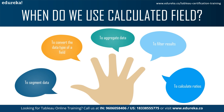You can use calculated fields to create new data from existing data in your data source. When you construct a calculated field, you're essentially adding a new field whose values or members are determined by a calculation that you control. This new calculated field will be saved to your Tableau data source and can be used to build more complex visualizations, without affecting your original data. Calculated fields can be used to easily segregate your data in new ways, or to test a notion such as a new dimension or metric before making it a permanent field.